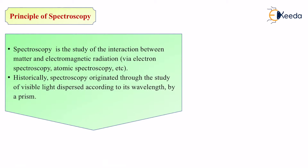Historically, spectroscopy originated through the study of visible light dispersed according to its wavelength by a prism. The term spectroscopy was originally given to us by Sir Isaac Newton — the same scientist who gave us the entire concept of gravitation. He said that whenever light is dispersed — meaning deflected into a spectrum — what is a spectrum? It is a range of lights. For example, let's take a rainbow.